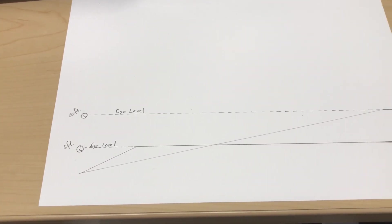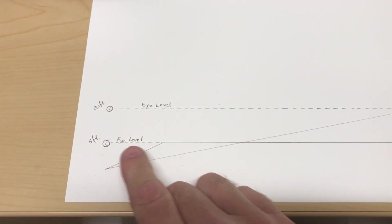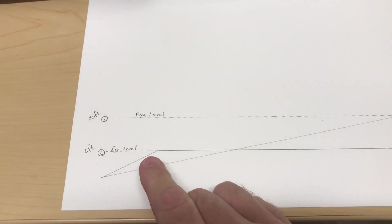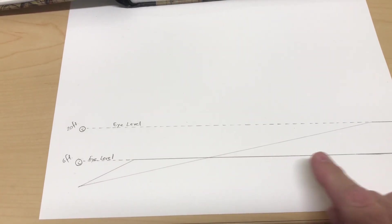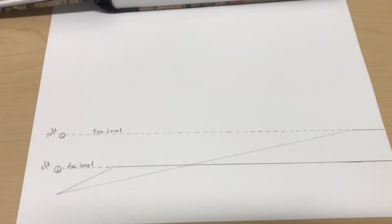This person had this diagram and they showed someone at 6 feet and their eye level and where the horizon is, and they think that the Earth is a flat plane after that. At 20 feet, eye level, and they think the Earth is a flat plane after that.